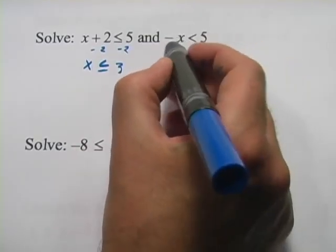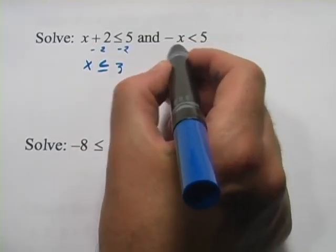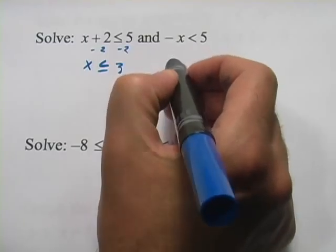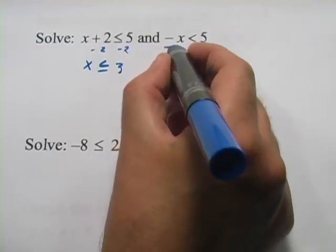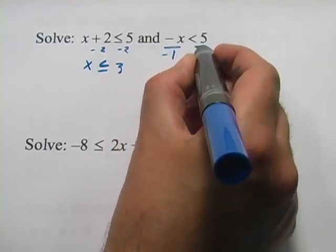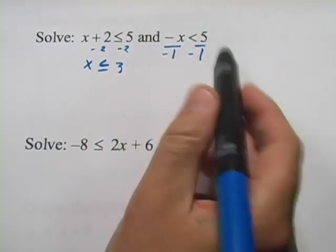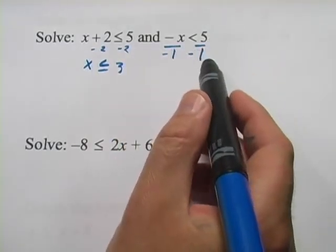This one's a little trickier. It's not solved, although it almost looks like it is. There's a negative sign in front of the x. We've got to get rid of that. I'm going to get rid of it by dividing everything by negative 1. It amounts to the same thing. I'm just going to change the sign of everything.